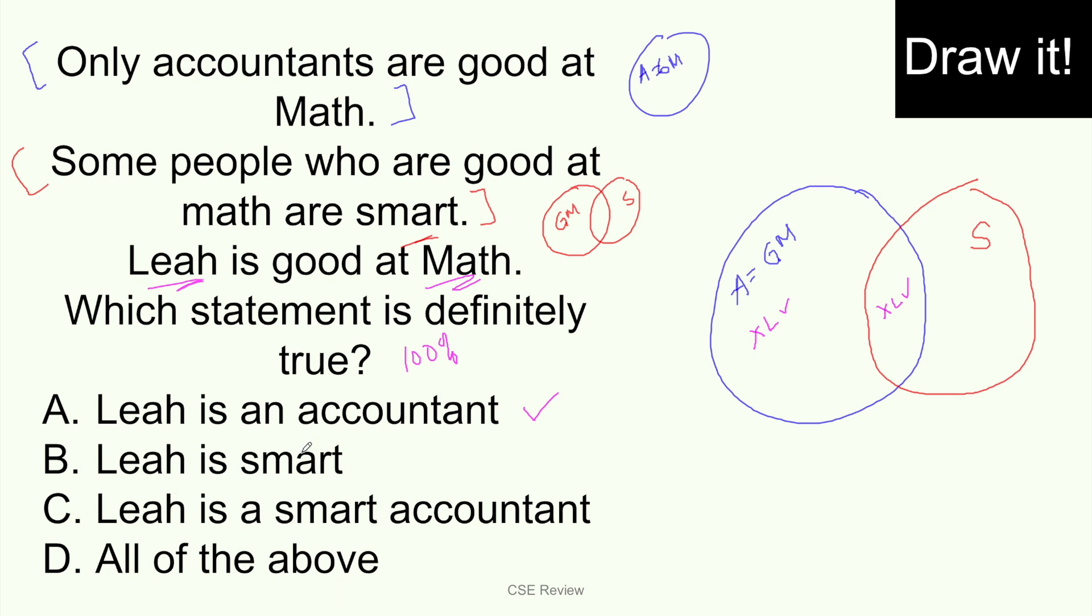So tignan natin yung next one. Leah is smart? Look at the drawing. Leah is smart ba? Ngayon, kung dito si Leah, at dyan lang siya at hindi siya pwede lumabas dyan, then this is correct. Pero may possibility na good at math siya pero hindi siya smart. Kasi nandito siya. So this is not sure. Hindi siya pwede.